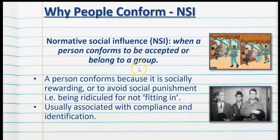So why do people conform? The most common reason is a phenomenon known as normative social influence, or NSI. This is when a person conforms to be accepted or to belong to a group. A person conforms because it is socially rewarding or to avoid social punishment, such as being ridiculed for not fitting in. It's usually associated with compliance and identification, which I've talked about in my previous video.